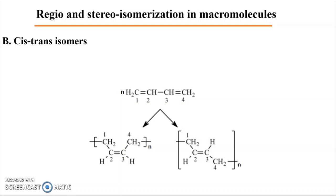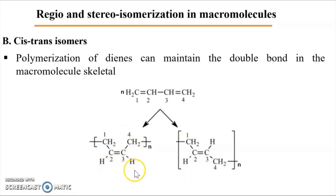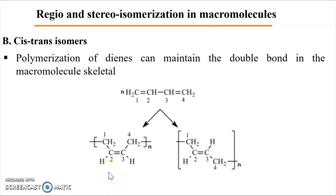In addition to tacticity isomerization, which is correlated to monosubstituted monomers, we can also talk about cis and trans isomers in the case where the monomer has more than one double bond. If we consider the polymerization of dienes, the double bond can be maintained in the backbone after polymerization. Thus, we can obtain polymers having C=C double bonds in the backbone, and we can identify two types of isomerization: cis and trans. As we have two different isomers, we have two different structures, and their thermal and mechanical properties will differ.